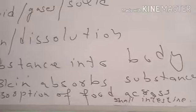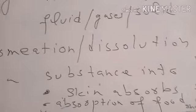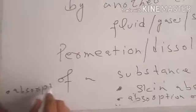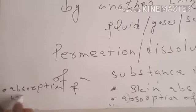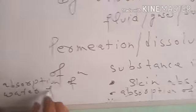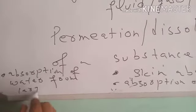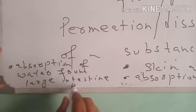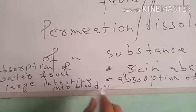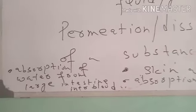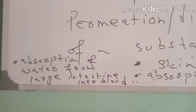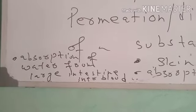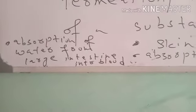Another example of the absorption in the body is the absorption of water from large intestine into blood which is present around the large intestine.